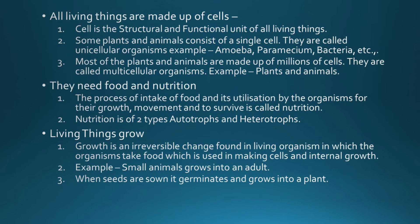Nutrition is of two types: autotrophs and heterotrophs. Autotrophs are organisms which can make their own food — like plants. Heterotrophs are organisms which are dependent on others for food — animals are known as heterotrophs.